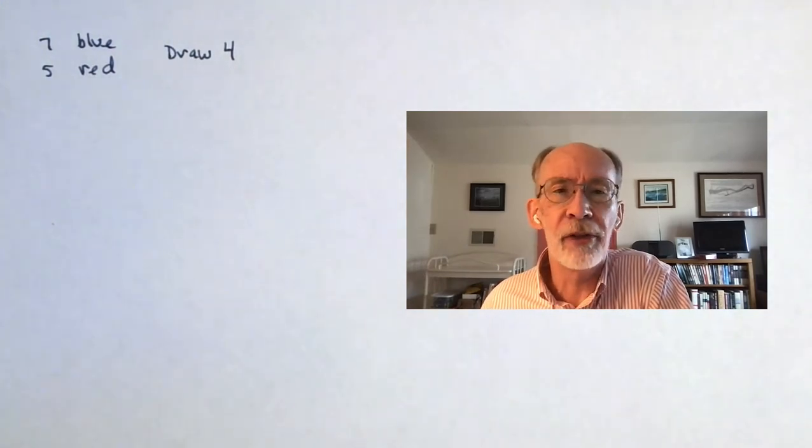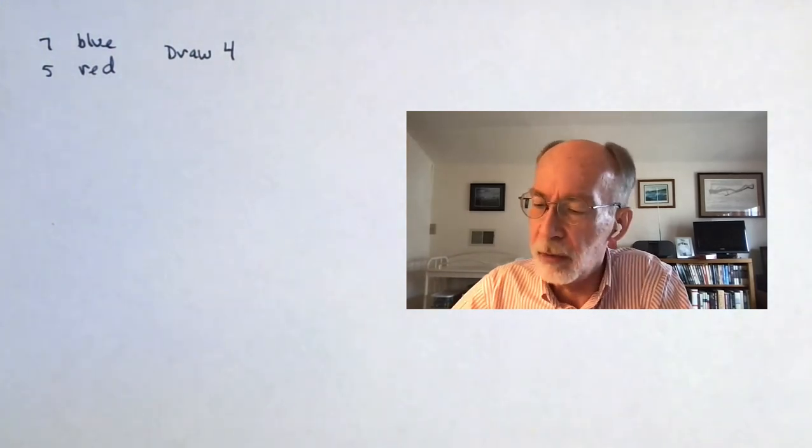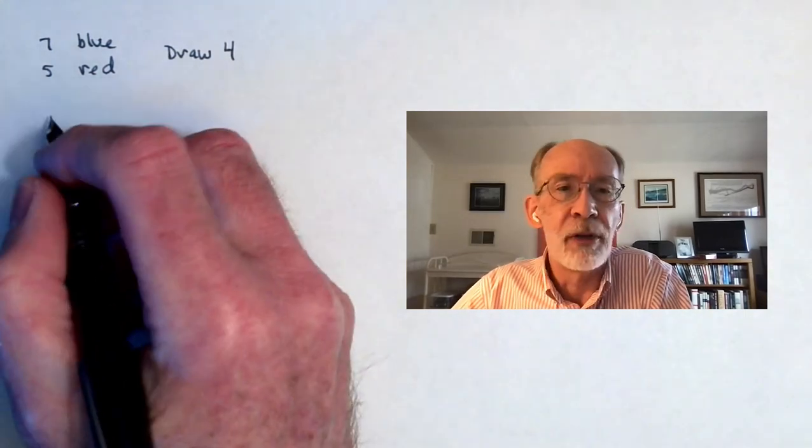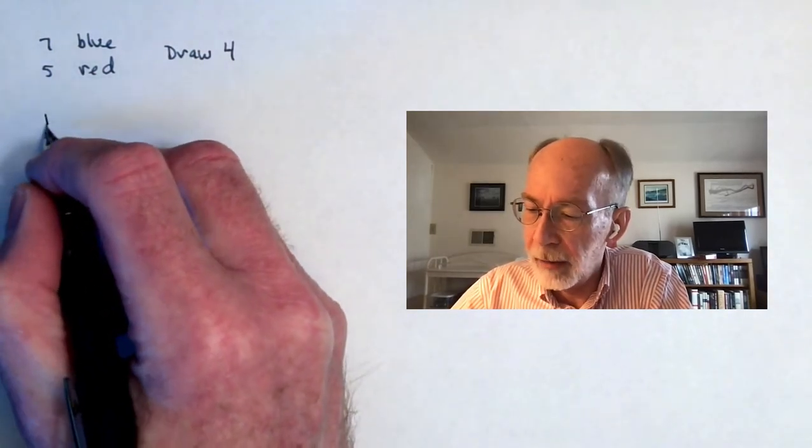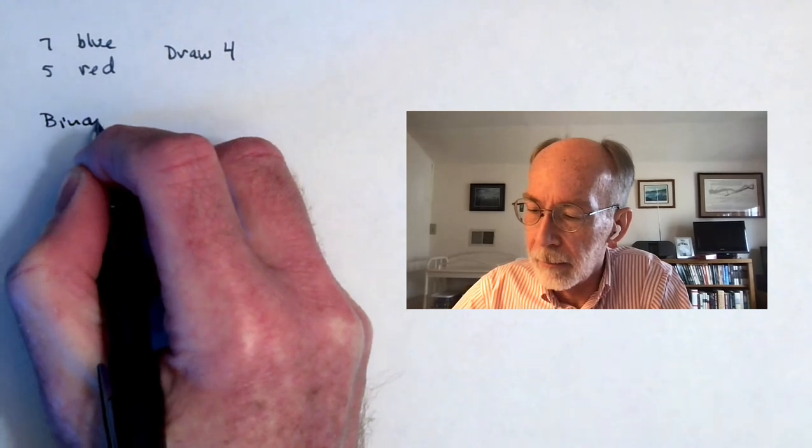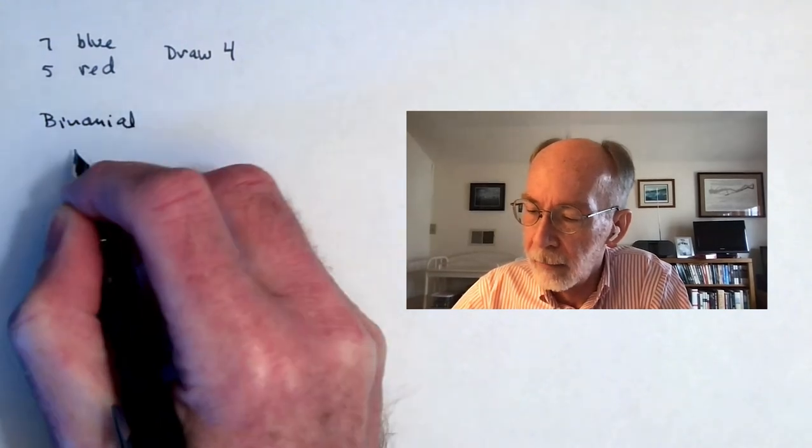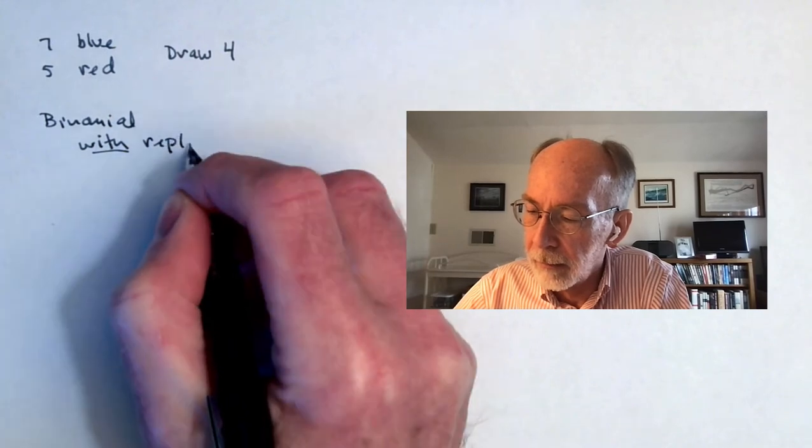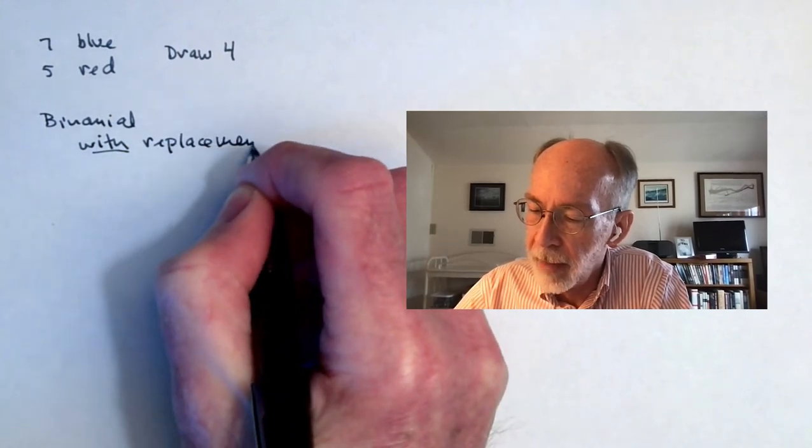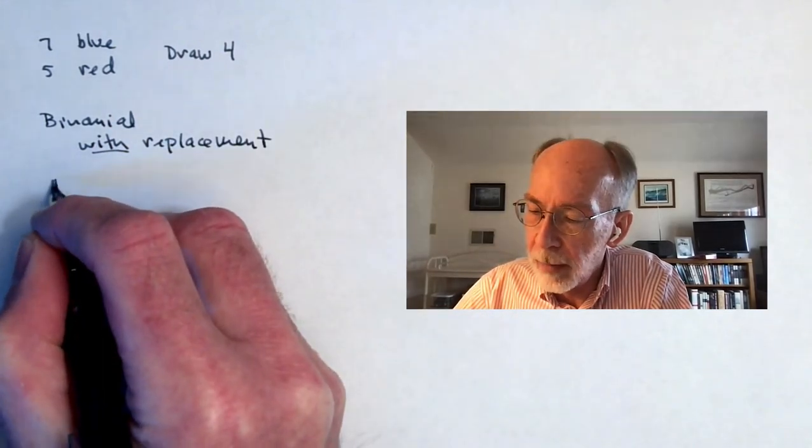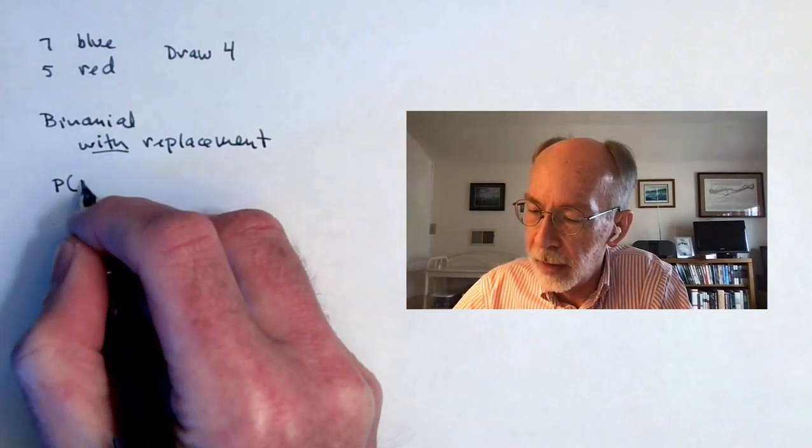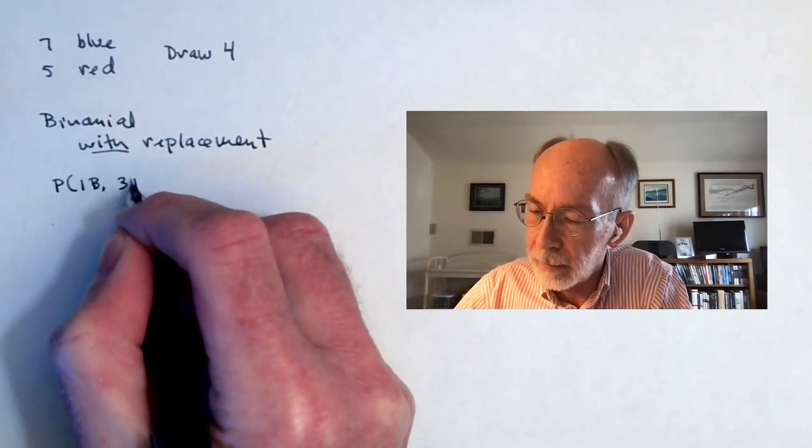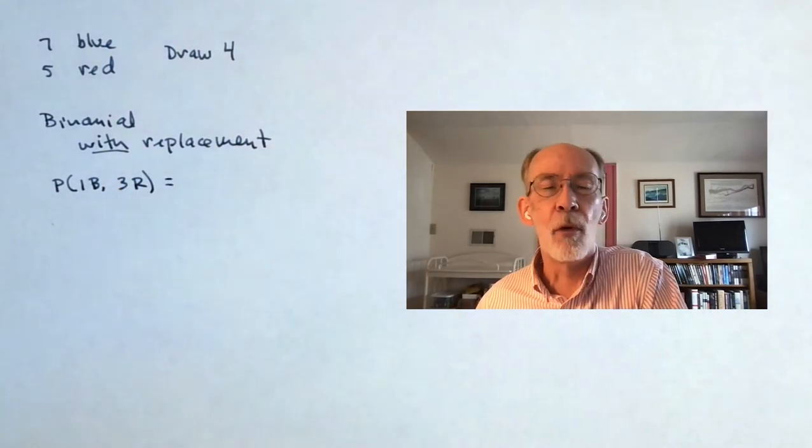Just for comparison purposes, let's imagine first that we're doing it with replacement. So those of you who have some familiarity, this is going to be binomial. And we're going to reach in and get four. We want to know the probability that of the four, one is blue and three are red.